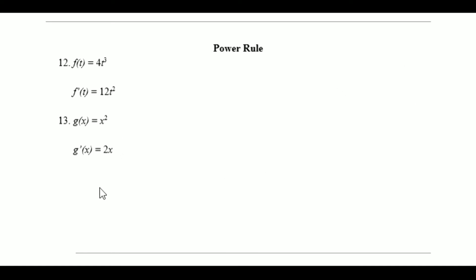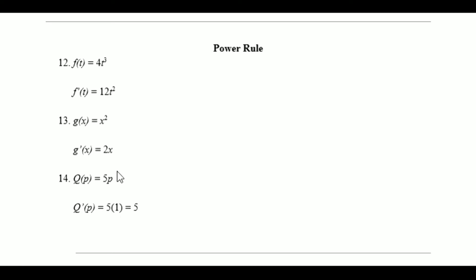For the last example, we have 5p to the first power — the power is there, it's just not written out. You do the same thing: bring the power out to the front and multiply by the constant, which is 5. So you have 5 times 1, which is 5. Then you reduce the power by 1, so that's 1 minus 1, which gives you 0. Now you have p to the 0 power, and anything to the 0 power equals 1.